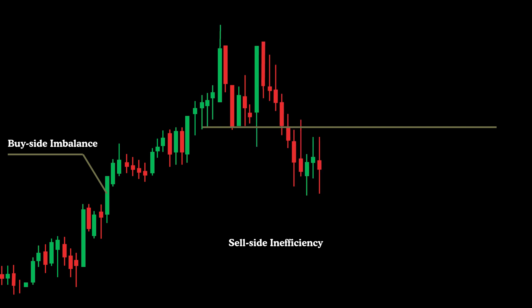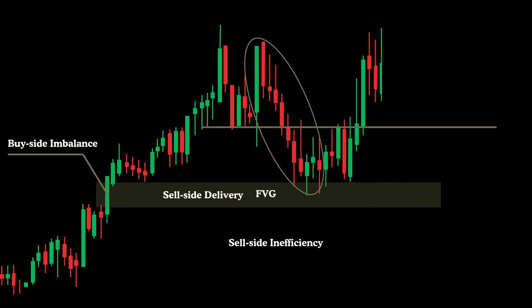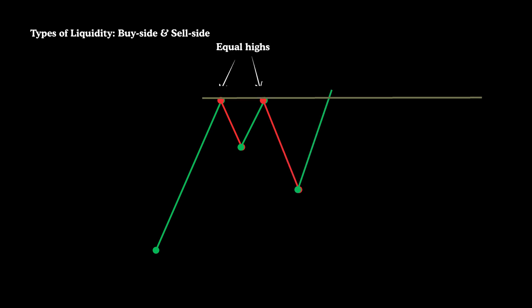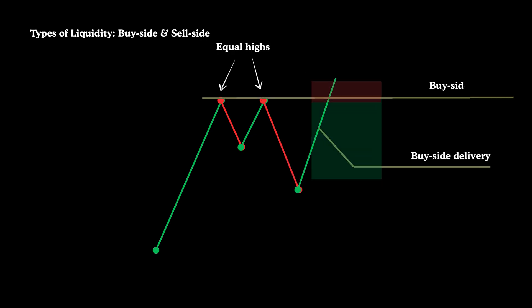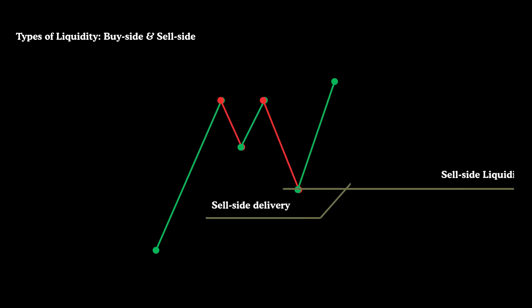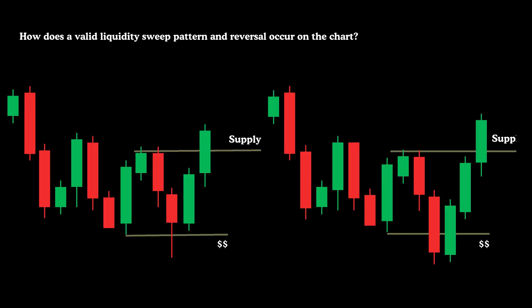This video serves as an in-depth guide on algorithmic price delivery within institutional market fluctuations. We're breaking down the buying and selling frameworks used by market makers within smart money concepts. Comprehending these frameworks will give you insight into how significant price shifts occur in the market, and also help position you on the correct side of market direction.